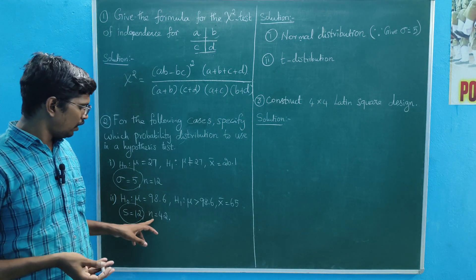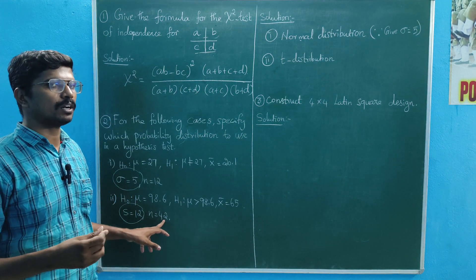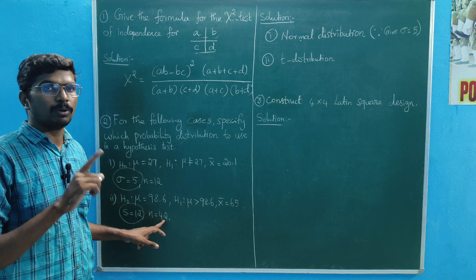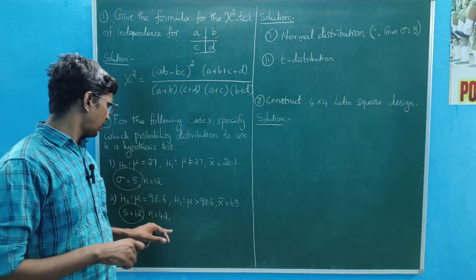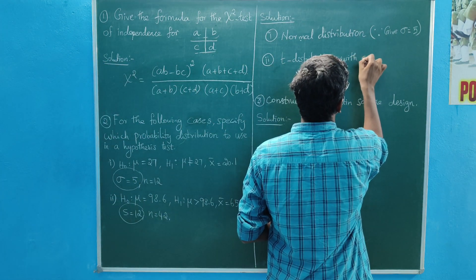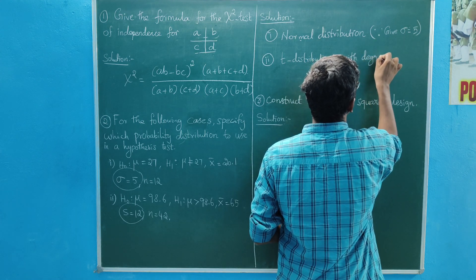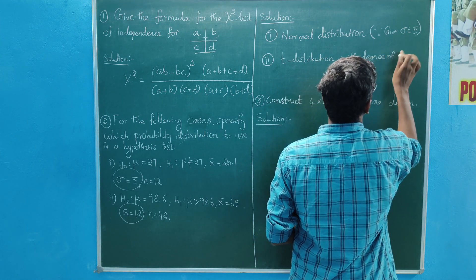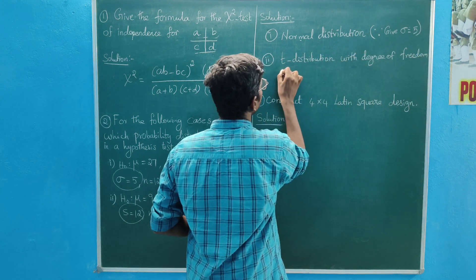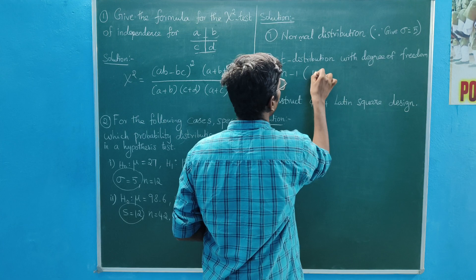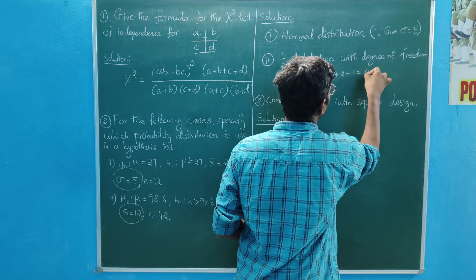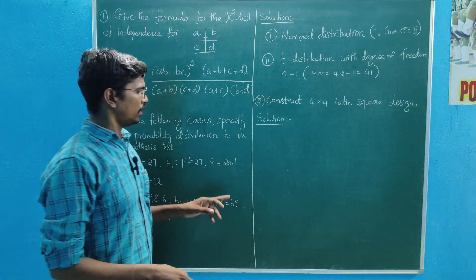If you want to add the distribution data, you will get the data. n minus one is given: 42 minus 1 equal to 41, that is the degrees of freedom n minus one.